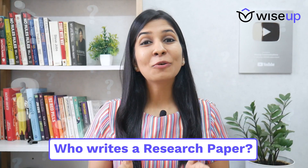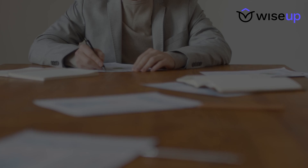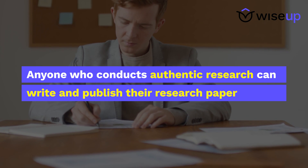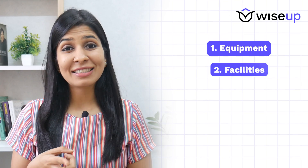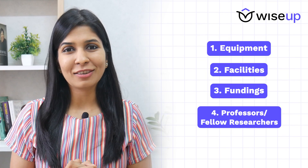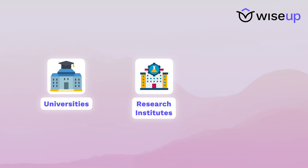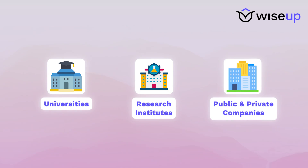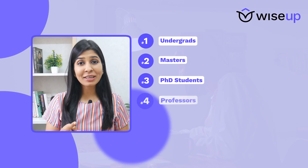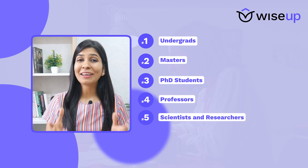Now let's understand who writes a research paper. Technically, anyone who conducts authentic research can write and publish a research paper. But research requires equipment, facilities, funding, and access to people who have the knowledge to guide you. Therefore, research is usually conducted by universities, research institutes, and public and private companies. That is why research papers are usually written by academic scholars — undergrad, masters, and PhD students — as well as professors, scientists, and researchers working in companies and organizations.